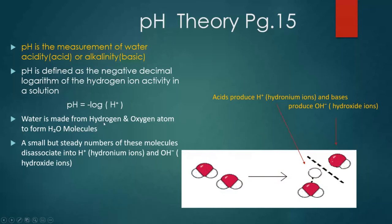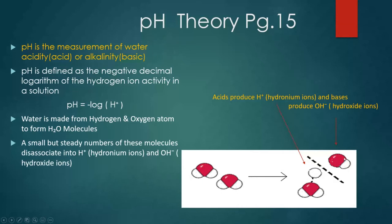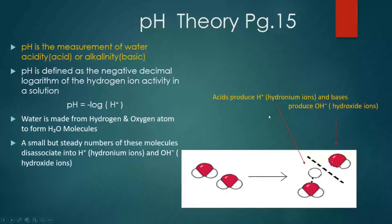Water is made from hydrogen and oxygen atoms forming water molecules. A small but steady number of these molecules will dissociate into hydronium ions and hydroxide ions. When H₂O dissociates and releases hydrogen atoms, it creates a higher concentration of hydrogen atoms, giving an acid. If we end up with more hydroxide ions, we get a base. Pure water has equal amounts of hydroxide and hydronium — that's why the pH is 7, or neutral. An abundance of H⁺ indicates an acid; an abundance of OH⁻ indicates a base.